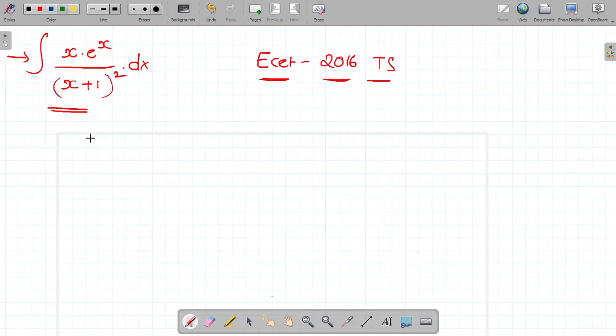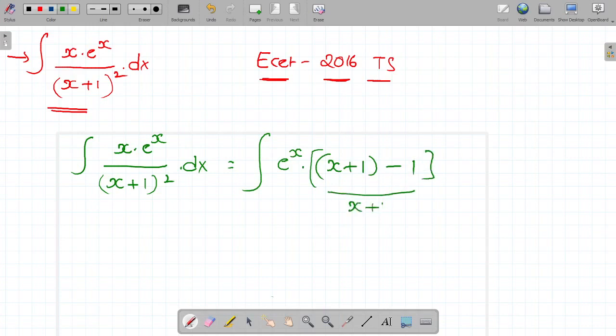First, I have the given information: integral of x into e power x by x plus 1 whole square into dx. It can be rewritten as integral of e power x, x plus 1 minus 1, by x plus 1 whole square into dx.